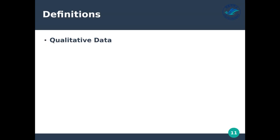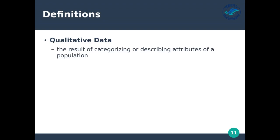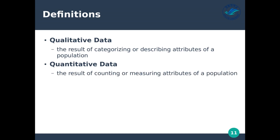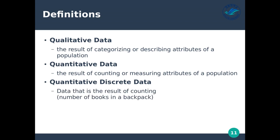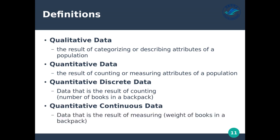Qualitative data is the result of categorizing or describing attributes of a population — we're dealing with categories, not necessarily measurements. Quantitative data is the result of counting or measuring attributes of a population — we're dealing with numbers. Quantitative discrete data is data that results from counting, for example the number of books in a backpack. Quantitative continuous data is data that results from measuring. Both discrete and continuous give us numerical values, but we can differentiate between them.